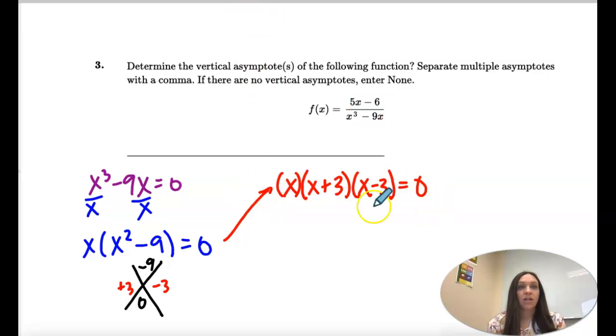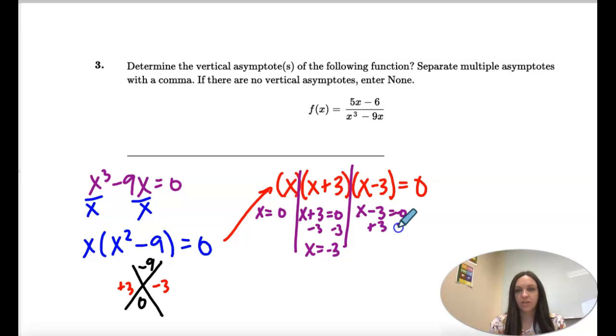And once it's all in nice factored form, we set each factor equal to zero. So x equals zero, you solve that to get negative three, and then plus three.